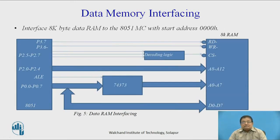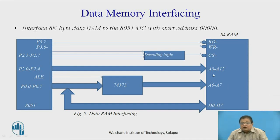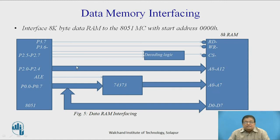This is the overall interfacing schematic. An example of 8K memory is shown. For 8K, 13 address lines are required: A0 to A7 are used for the lower portion and A8 to A12 for the upper portion, while the remaining lines A13, A14, and A15 are used for decoding logic depending on your address range. RD bar is connected to RD bar and WR bar is connected to the WR bar of the memory.